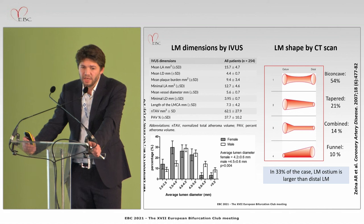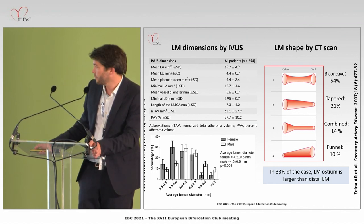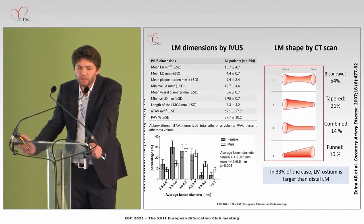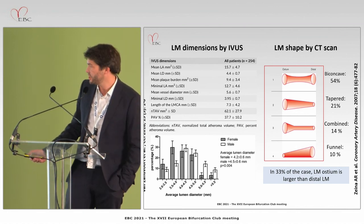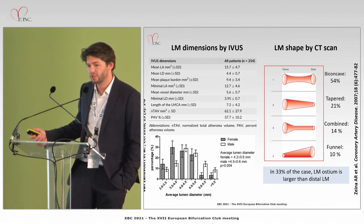Large left main vessels are not that unusual, because if you look by IVUS, you observe that there is a substantial percentage of patients displaying an average diameter over 5.5 millimeters — so once again, extremely large left main.